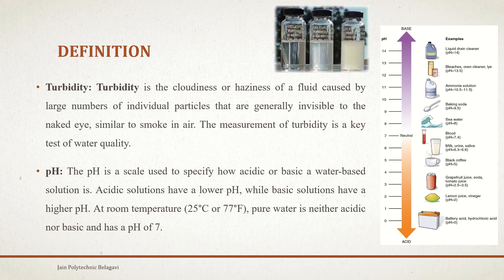From the pH scale diagram, at pH 7 it is neutral. Blood has a pH value of 7.4, placing it in the neutral range. Milk, urine, and saliva have a pH of around 6.3 to 6.6. Black coffee is around pH 5. Grapefruit juice, soda, and tomato juice are around 2.5 to 3.5, while lemon juice and vinegar are around pH 2.